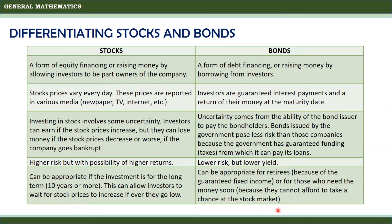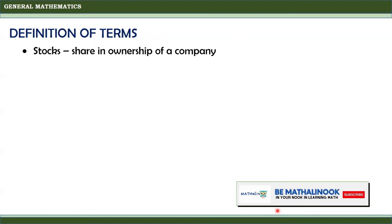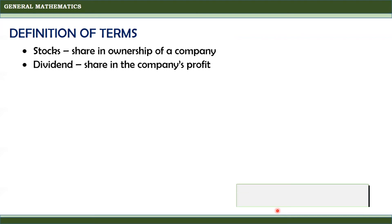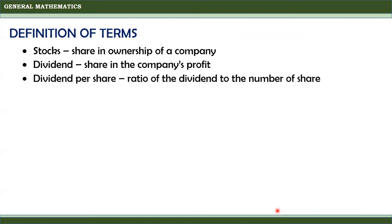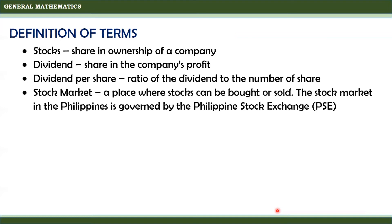Now let us focus on the concept of stocks. Stocks means a share in ownership of a company. Dividend is a share in the company's profit. Dividend per share is the ratio of the dividend to the number of shares.